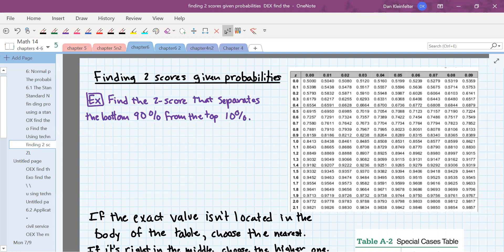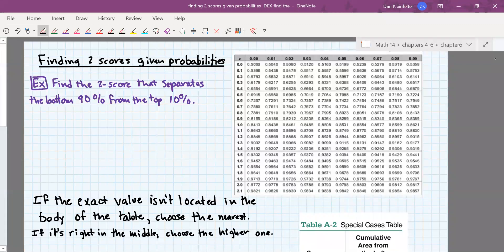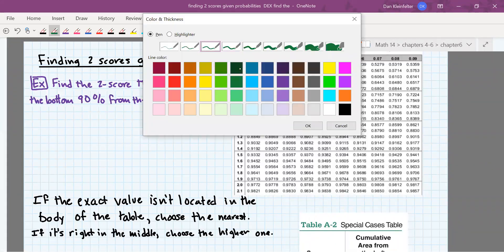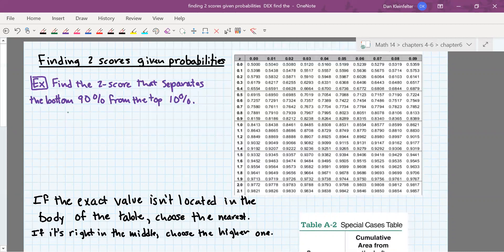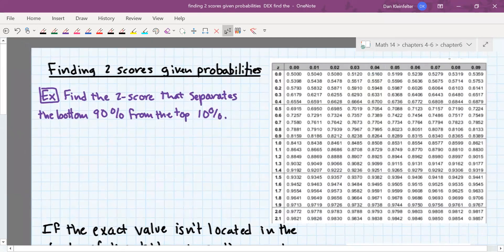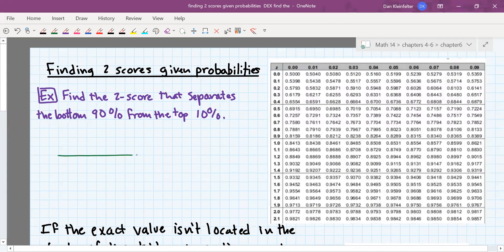So remember that the Z scores are along the margin of the table, and probabilities are in the body of the table. So let's try an example. So here it says, find the Z score that separates the bottom 90% from the top 10%.